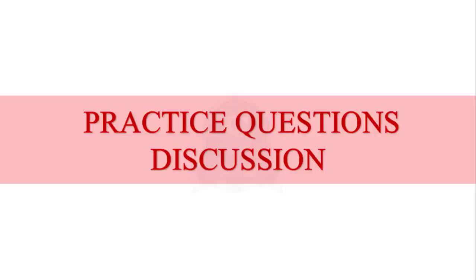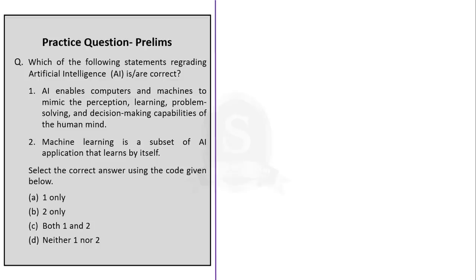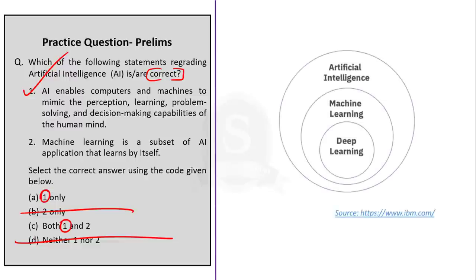We are now at the practice question session to test our knowledge from today's discussion. We have three questions. The first is about artificial intelligence: which statements are correct? Statement 1 — AI enables computers and machines to mimic the perception, learning, problem solving and decision making capabilities of the human mind. Statement 2 — Machine learning is a subset of artificial intelligence application that learns by itself. From our discussion we know both statements are correct, so the correct option is Option C, both 1 and 2.